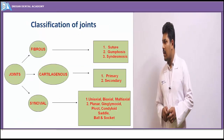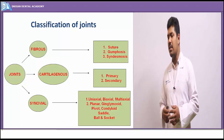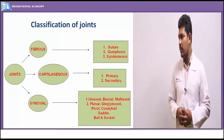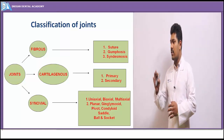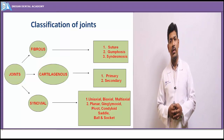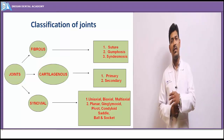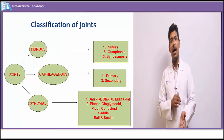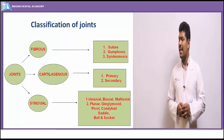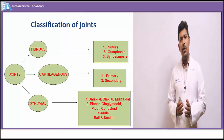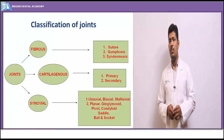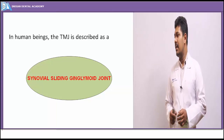The joints in the human body are classified as three basic types: fibrous, cartilaginous, or synovial. The TMJ falls under the synovial joint category, which is further divided into uniaxial, biaxial, or triaxial depending upon the axis and planes of jaw movement. These synovial joints are further subdivided into planar or ginglymoid types, where ginglymoid means hinging. The TMJ involves both types. Hence in human beings, the TMJ is described as a synovial sliding ginglymoid joint.